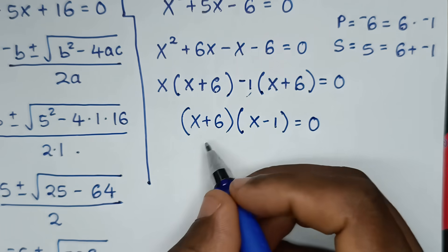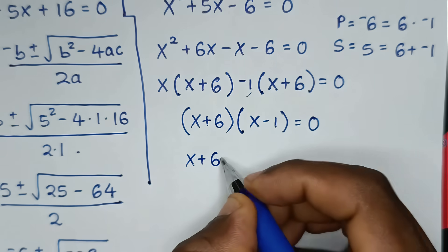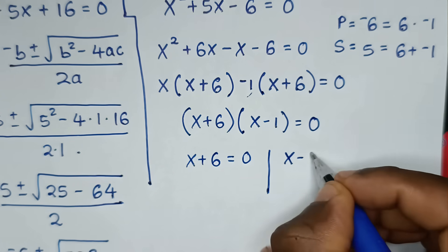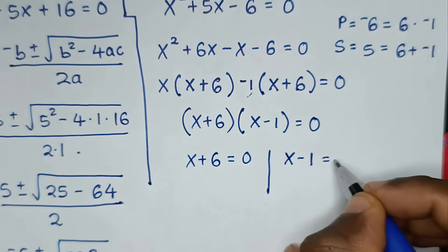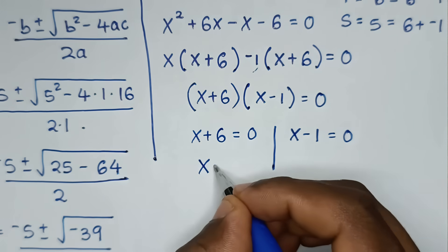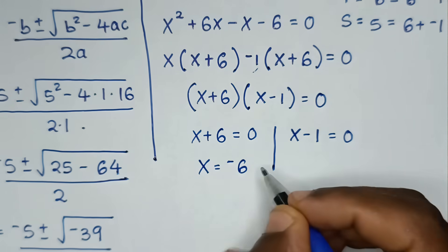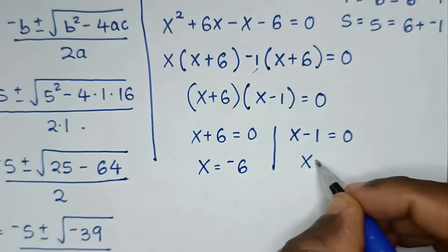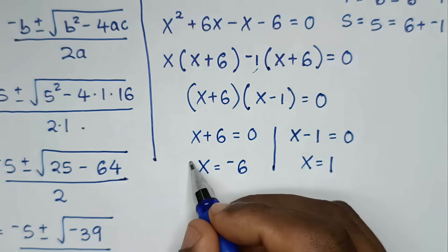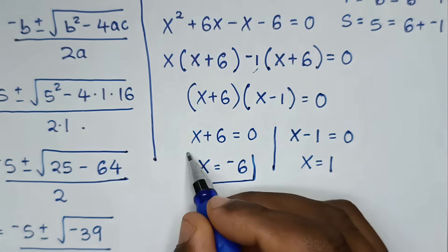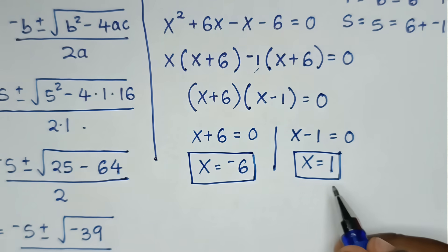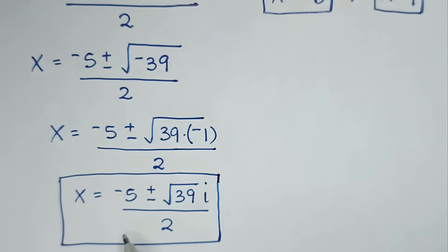This gives x + 6 = 0, so x = -6, and x - 1 = 0, so x = 1. We now have two real solutions and two complex solutions.